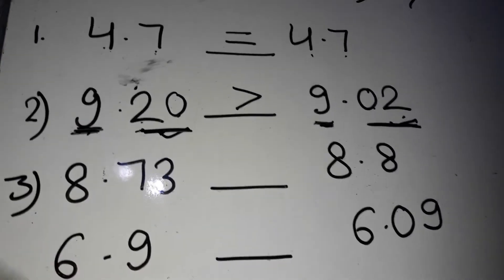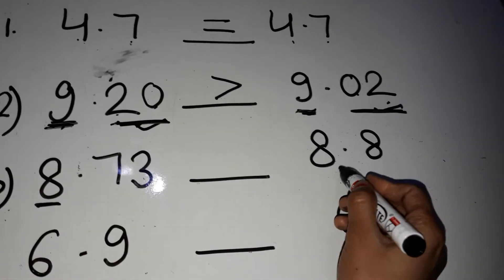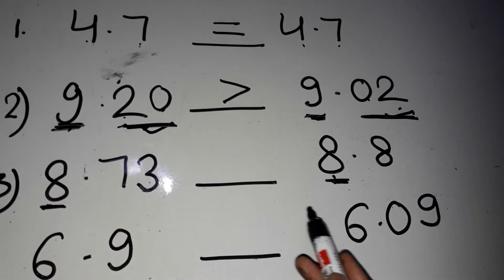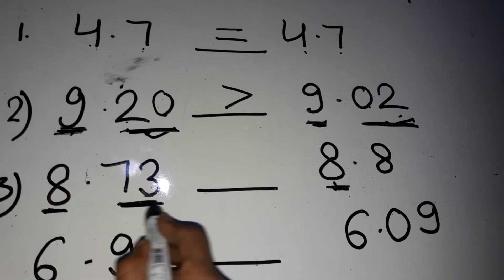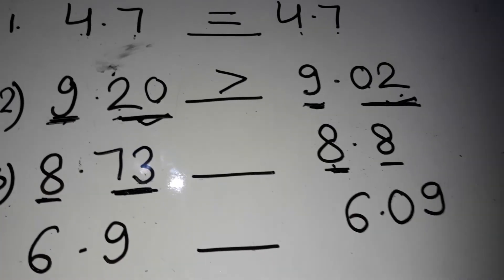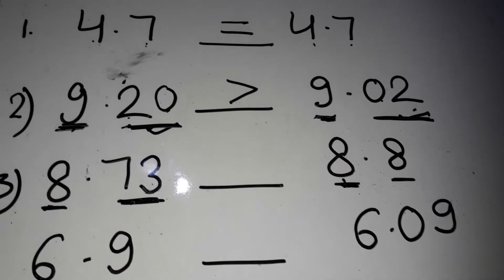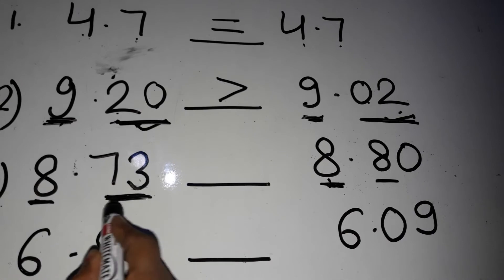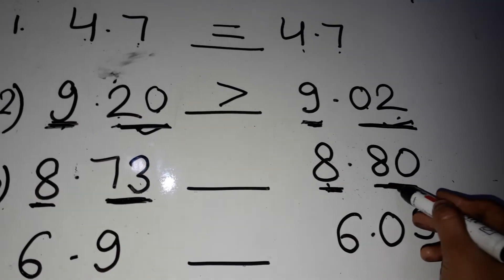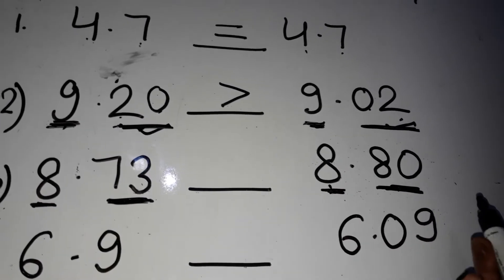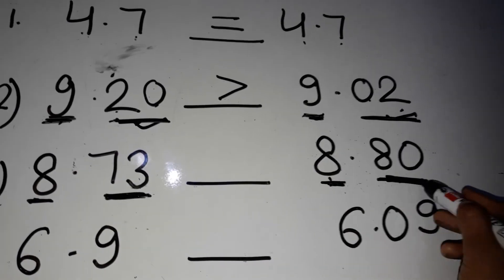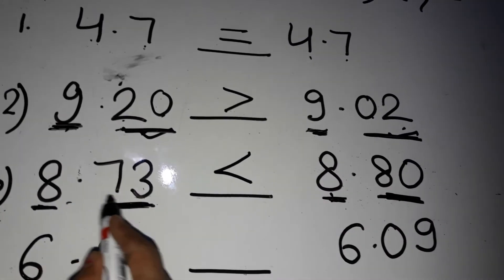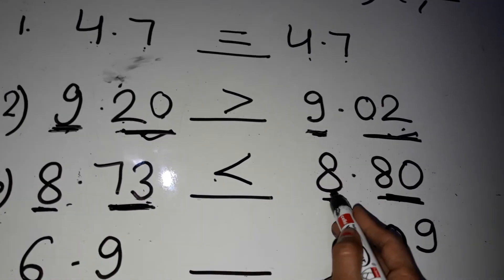Now come to the third example. First, we have to see the left side of the decimal number — both are the same. Now we will move to the right side. This has two decimal places and here is one decimal place only. You have to make them like by putting a 0. Now it also has two places of decimal. Compare the right-hand side of the decimal: this is 73 and this is 80. Which is big? 80 is big. So 8.73 is less than 8.80.